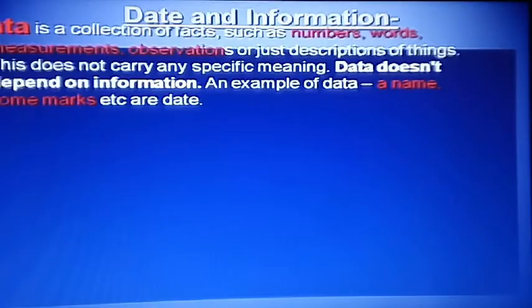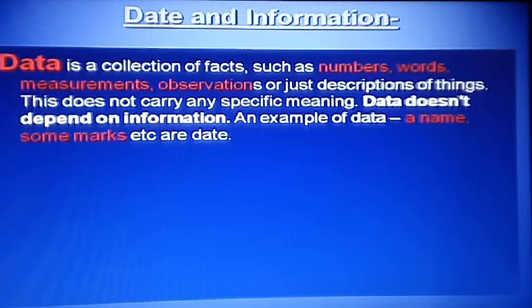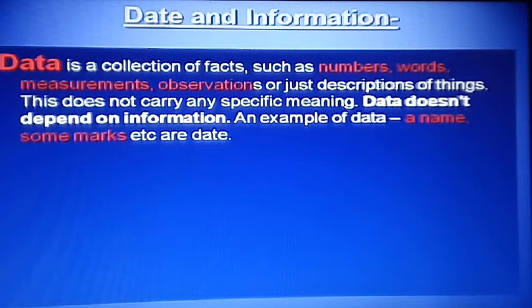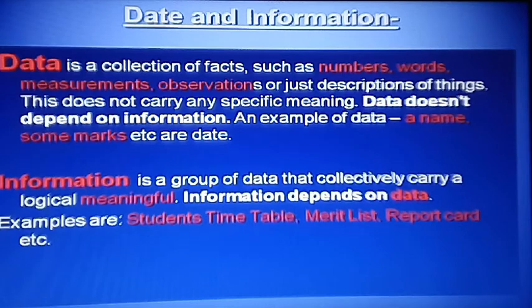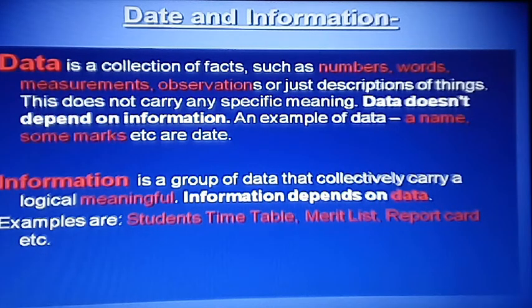First of all, let's look at data and information. What is data? Data is a collection of facts, numbers, words, and any symbols — that means you can write anything on paper. Examples include names, marks, etc. Information is a group of data that collectively carries a logical, meaningful message. So information is meaningful data.